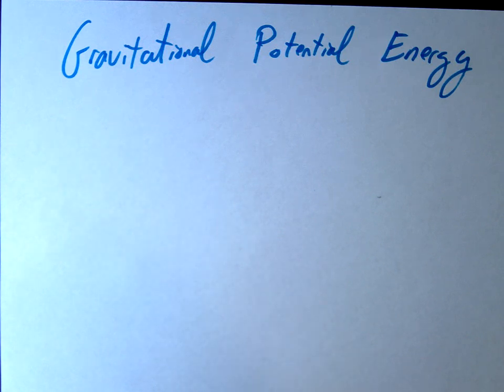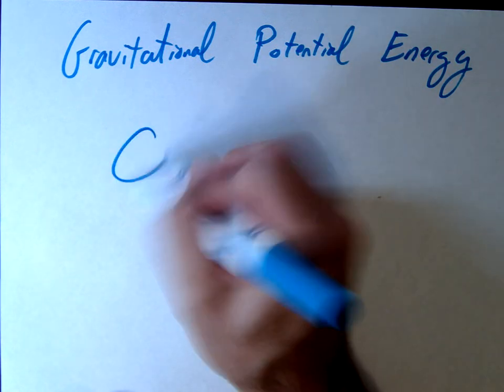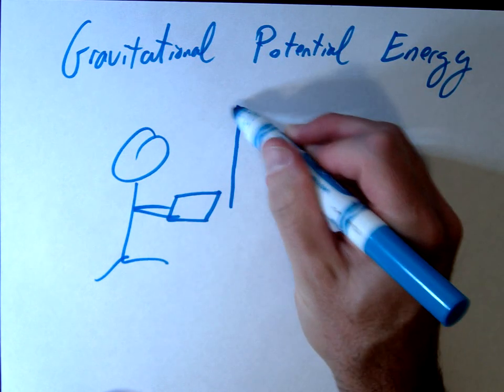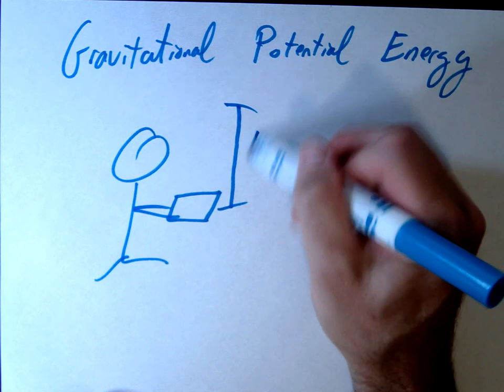Today we're going to learn about gravitational potential energy. Let's say for example that I'm lifting up a book. So I'm going to lift a book up to some certain height, H.